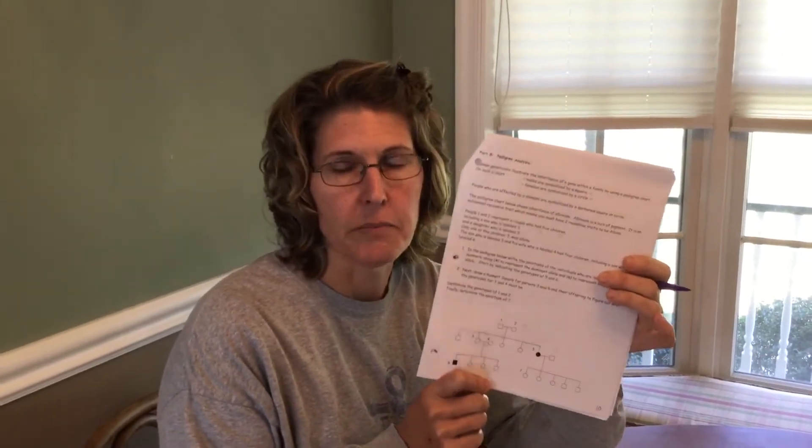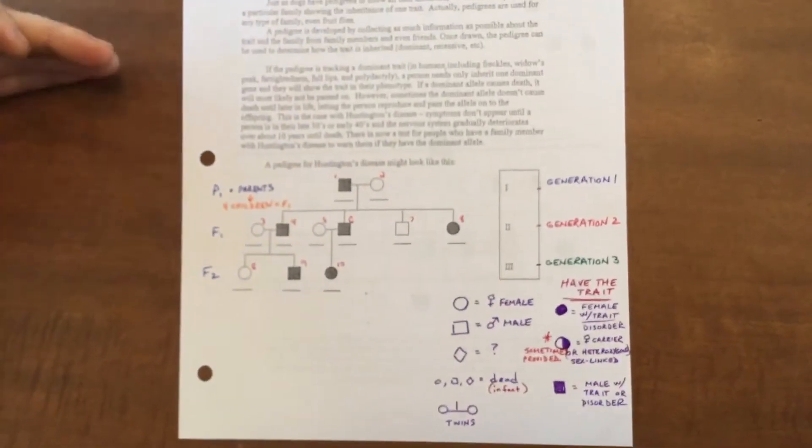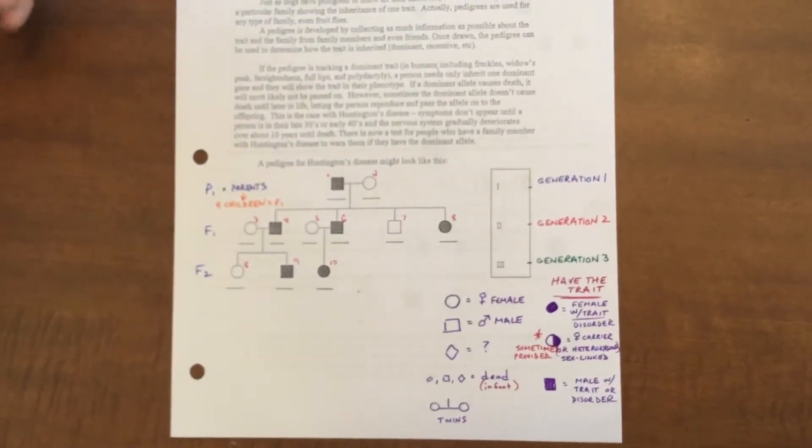The pedigrees we're looking at today are going to help you answer the last two pages of your big genetics packet — pages 10 and 11. The packet will be due on April 3rd to Google Classroom, so you can take pictures and upload them. Don't forget your genetics test is on the 7th. Pedigrees are kind of like family trees — we can see how a disorder or trait got passed along within a family.